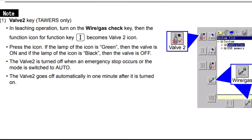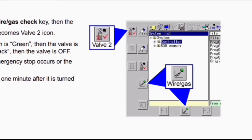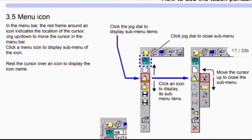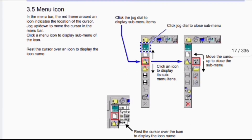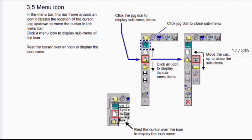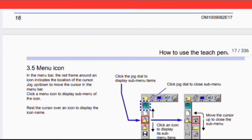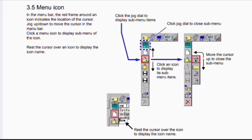Also shown is the system list: system controller and USB memory. This is the menu icon. In the menu bar, the red frame around an icon indicates the location of the cursor. Jog up or down to move the cursor in the menu bar. Click a menu icon to display the sub-menu of the icon. Reset the cursor over an icon to display the icon name. Click the jog dial to display sub-menu items, and click the jog dial again to close the sub-menu.